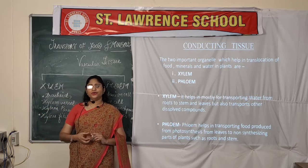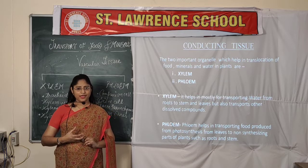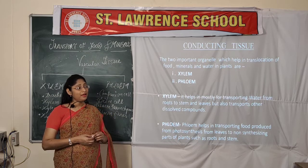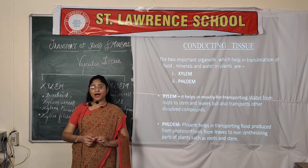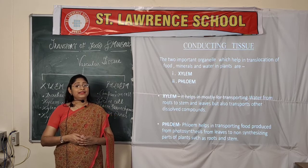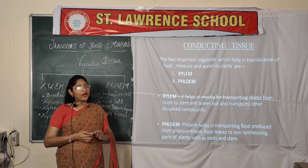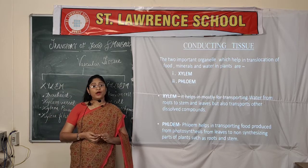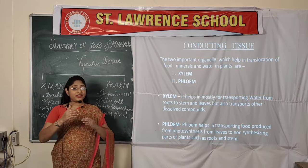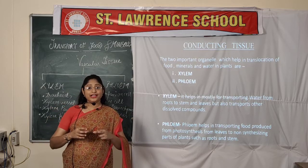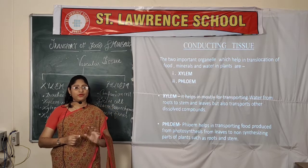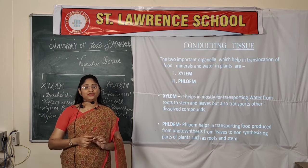All flowering plants have a unique and specialized system to transfer food, water, and minerals. These specialized cells or bundles of cells are called conducting tissue or vascular tissue. Because they are in the form of a series of bundles performing different functions but ultimately resulting in one unique function of transportation, they are also called vascular bundles.